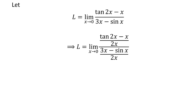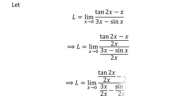Multiplying the numerator and the denominator of a fraction by a common factor does not change the value of the fraction. So, let us multiply the numerator and the denominator by the common factor 1 upon 2 times x. We can rewrite the numerator as tangent of 2 times x upon 2 times x minus x upon 2 times x, and the denominator as 3 times x upon 2 times x minus sin of x upon 2 times x.